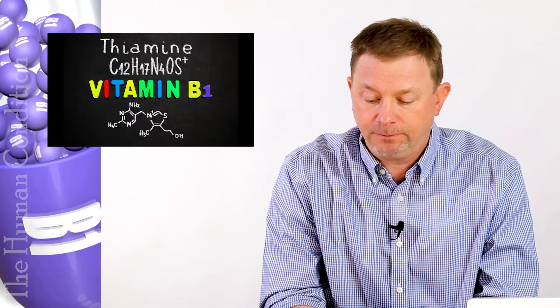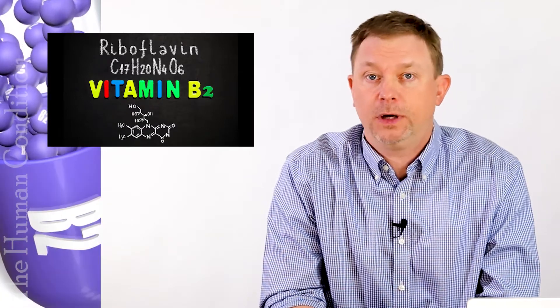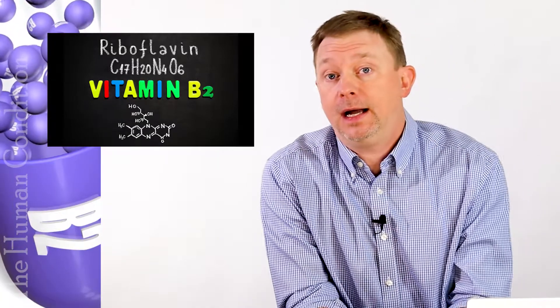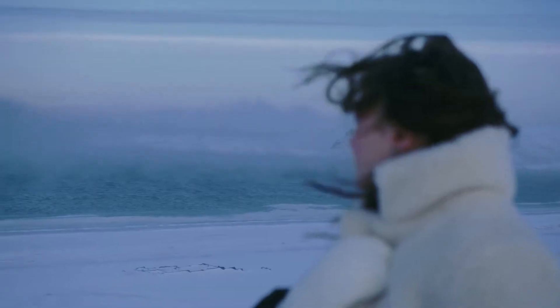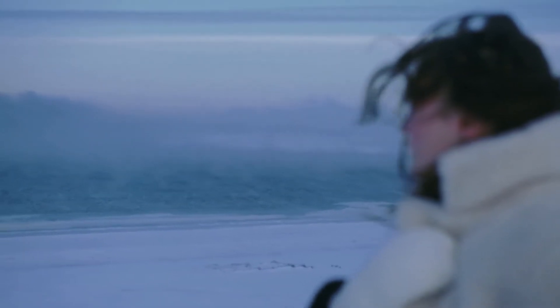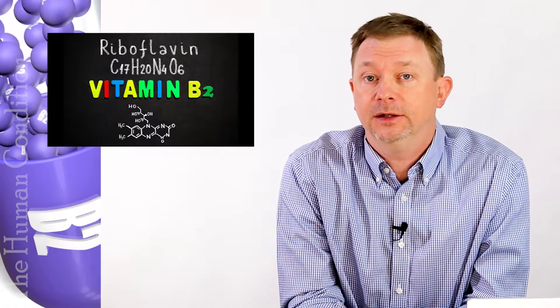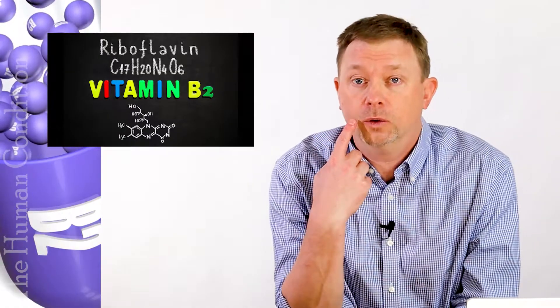The next vitamin is B2. B2 is riboflavin. We see B2 deficiency a lot of the time in northern climates where it gets cold and dry because B2 is involved in skin cracking, especially in the folds of the body, in the corners of the lips.